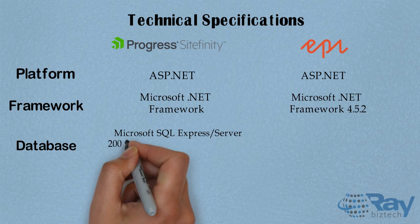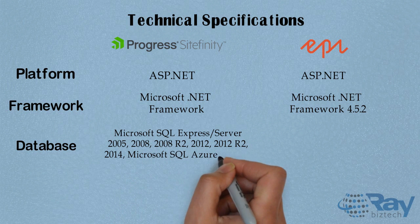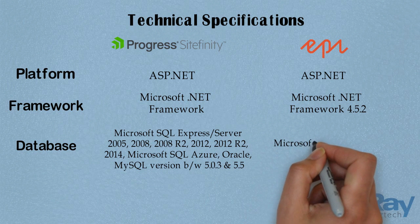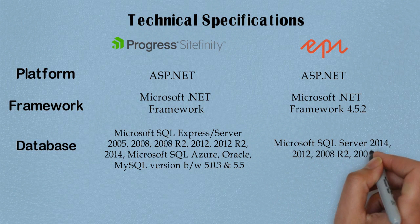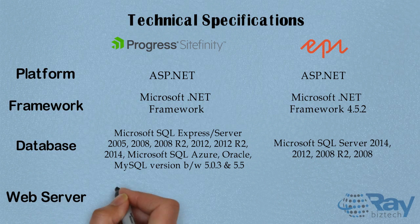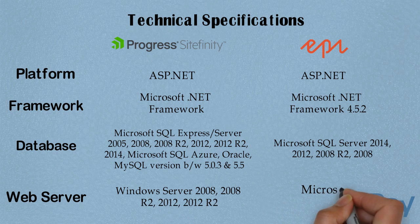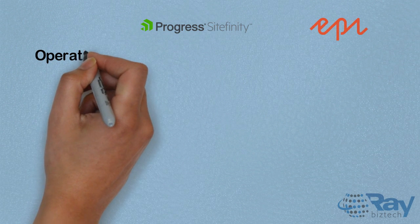Database for Site Affinity: Microsoft SQL Express Server versions 2005, 2008, 2008 R2, 2012, 2012 R2, and 2014; also Microsoft SQL Azure, Oracle, and MySQL versions between 5.3 and 5.5. For API Server, it is Microsoft SQL Server versions 8.5, 8.0, 7.5, and 7.0.